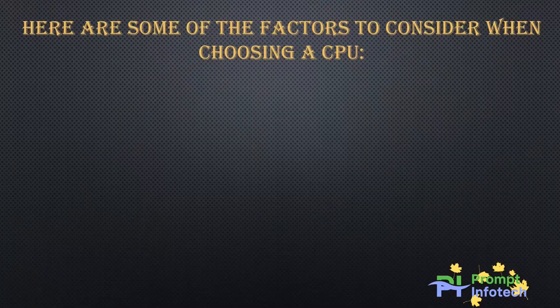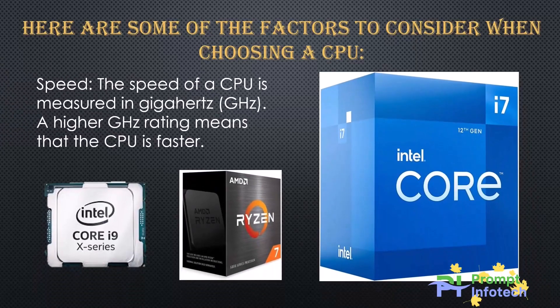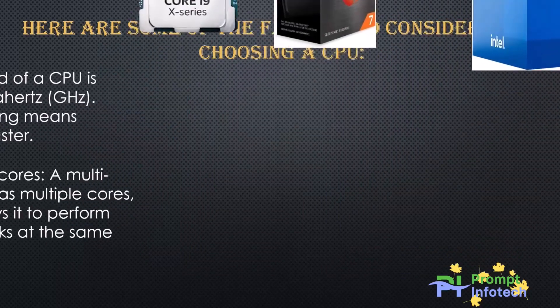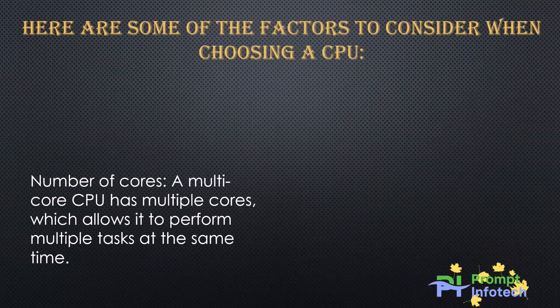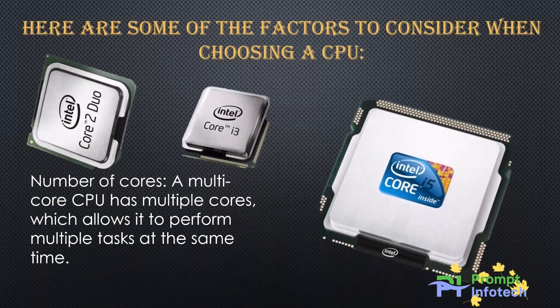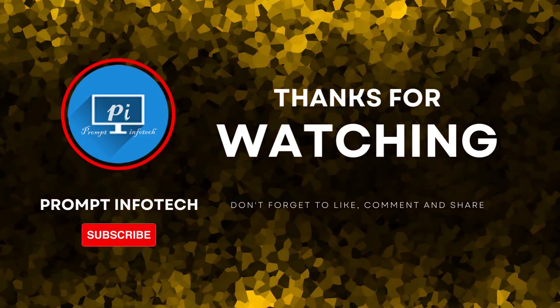Here are some of the factors to consider when choosing a CPU. Speed: the speed of a CPU is measured in GHz — a higher GHz rating means the CPU is faster. Number of cores: a multi-core CPU has multiple cores, which allows it to perform multiple tasks at the same time.